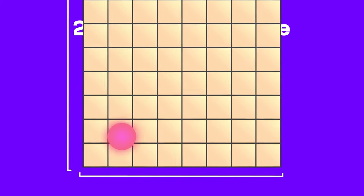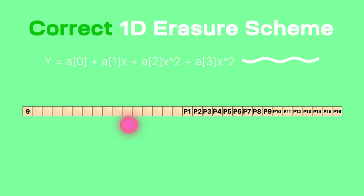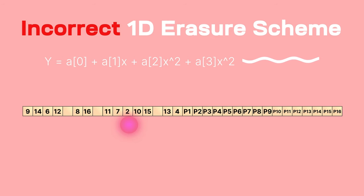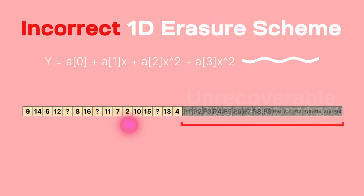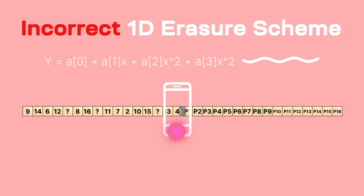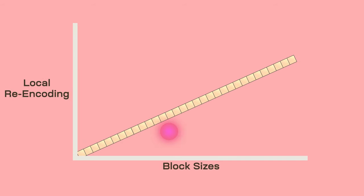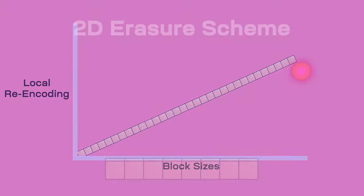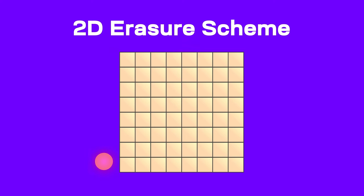If a light client finds a gap in a long erasure-encoded row of data, the context and ordering can help it fix it. But an attacker can incorrectly encode the parity at the end, compromising the 50% recoverability factor. So it's vital for light clients to detect this and fix it. However, the conventional method of re-encoding involves local recomputation of all this data, which is linear with block sizes — larger blocks demand more computation. Celestia, on the other hand, uses a 2D erasure encoding scheme, avoiding this light client scaling issue. The 2D erasure encoding scheme simplifies verification and re-encoding into smaller rows and columns.